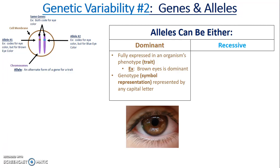To represent genotypes on paper — because we'll be practicing crossing different traits — we use a letter. This symbol representation is called a genotype. A dominant genotype is represented by any capital letter, such as capital A, capital H, or capital R. If you choose your own letter, pick one that's easily distinguishable in uppercase versus lowercase — for example, uppercase A is very different from lowercase a.